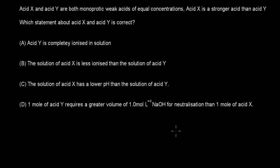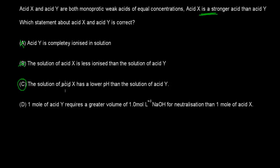Welcome back. The correct answer is C. A is wrong because acid Y is a weak acid and won't completely ionize. B is wrong because acid X is the stronger acid, so it is more ionized, not less. C is correct — the solution of acid X has a lower pH than the solution of acid Y because being stronger means more hydrogen ions in solution, which gives a lower pH. So C is correct.